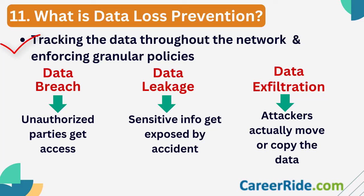Data loss events are often described as data breaches, data leakage, or data exfiltration — we use these terms interchangeably, but in reality they have different meanings. Data breach occurs when unauthorized parties get access to sensitive or confidential data. Data leakage is when sensitive information gets exposed to the public accidentally. Data exfiltration is when attackers gain access and move or copy the data to a device under their control — this is where the actual data theft occurs.